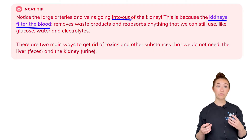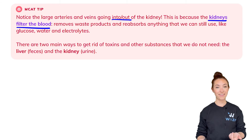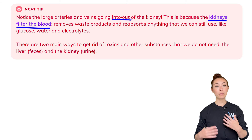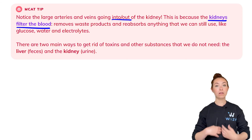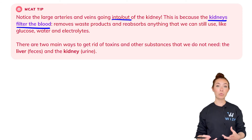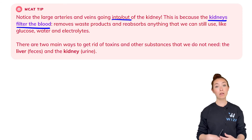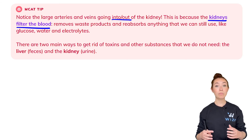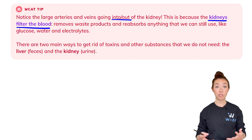The two main ways of getting rid of waste products are through our urine, which the kidneys help with, and also through feces. Anything we eat that we don't need we can directly get rid of, but also things processed by the liver — the liver is able to put those things into bile and we can get rid of them through feces as well. Keep in mind those are the two main ways we have of excreting things we don't need.